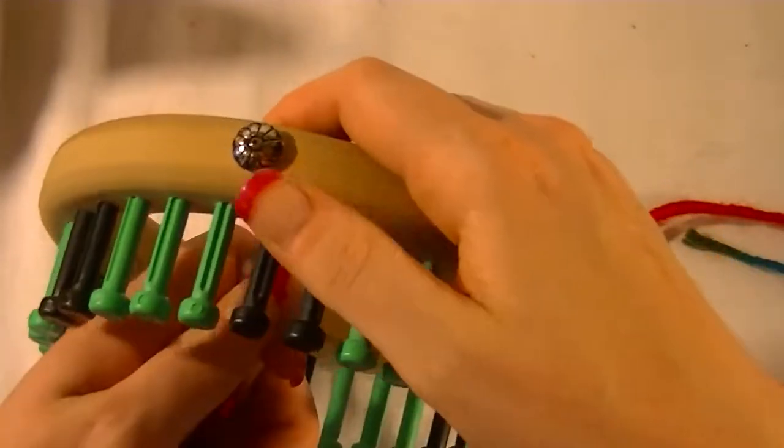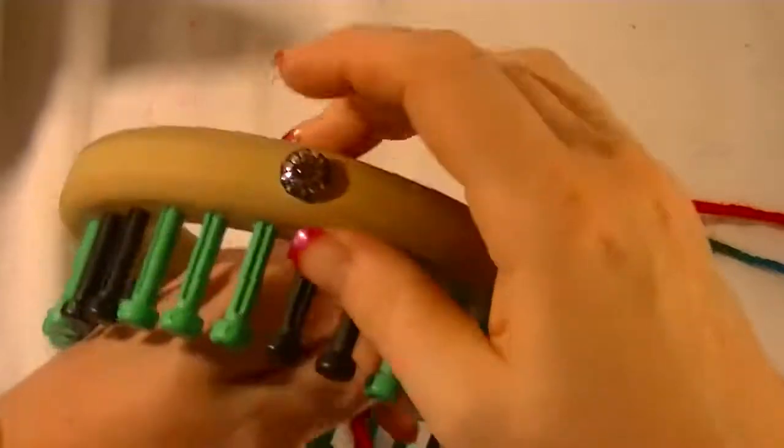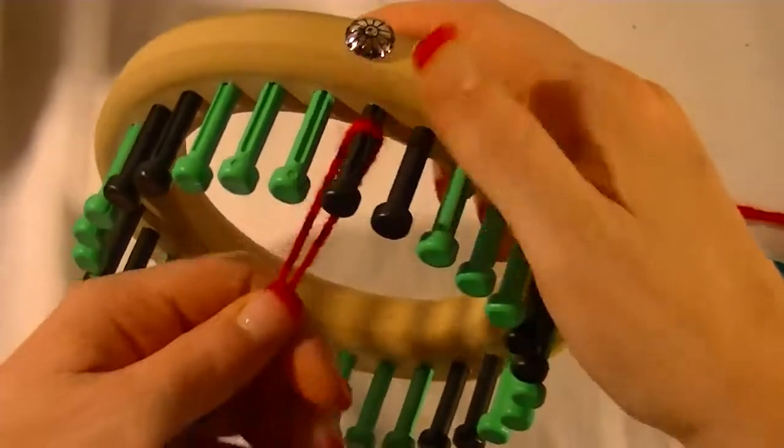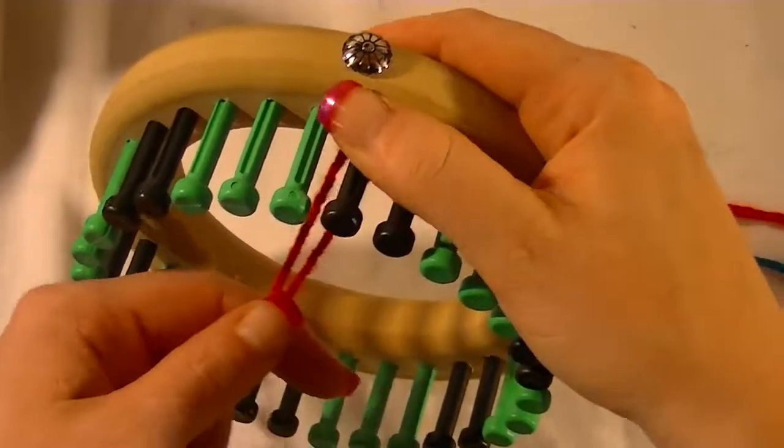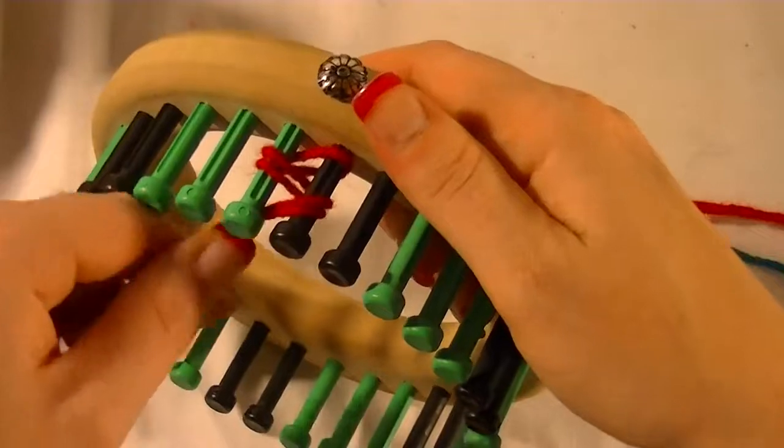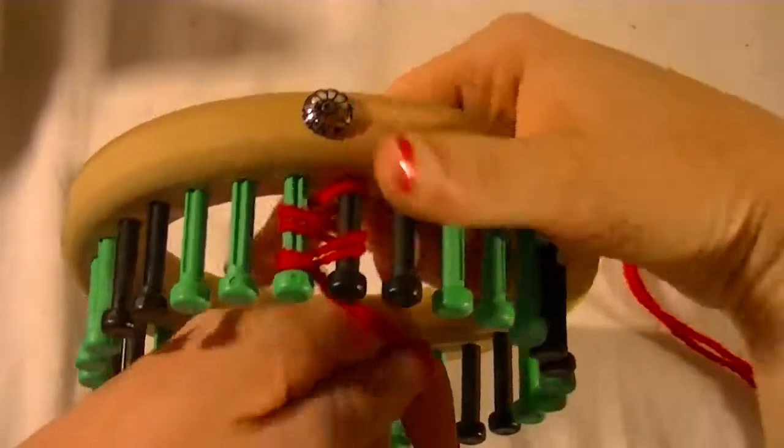Now how you do an I-cord is, either way if you're doing it one strand just wrap the strand around your anchor peg. If you're doing it two strands you just loop it over, but everything else is the same. You're going to wrap it like a figure eight.